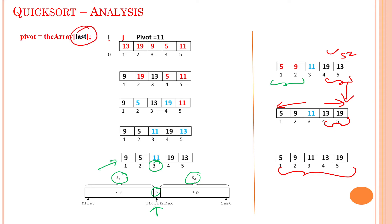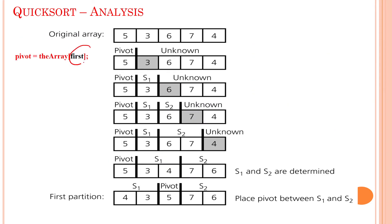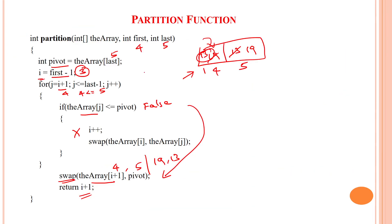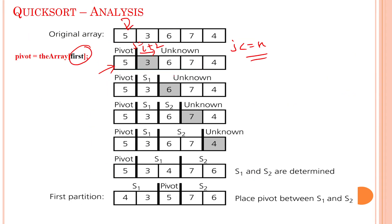In the previous example, we took the last element as the pivot element. Now, this example uses the first element as the pivot element — so 5 is taken as the pivot. Here, j starts from i plus 2 and iterates while j less than or equal to n. The first element is the pivot element, and we again produce sublist S1 on the left side and sublist S2 on the right side of the pivot, which are sorted out.